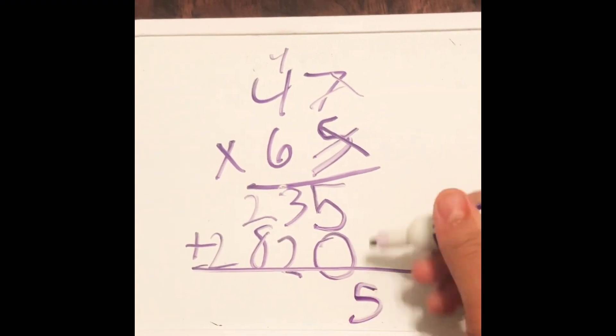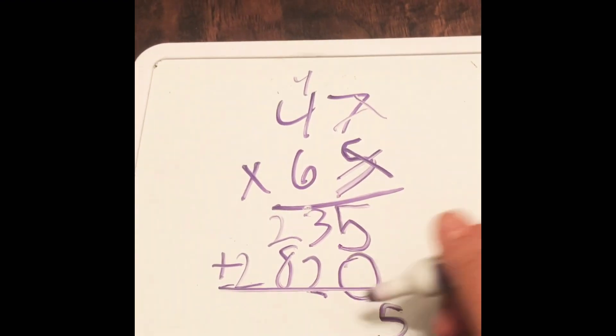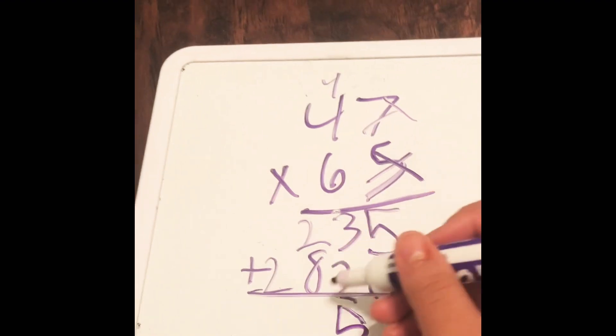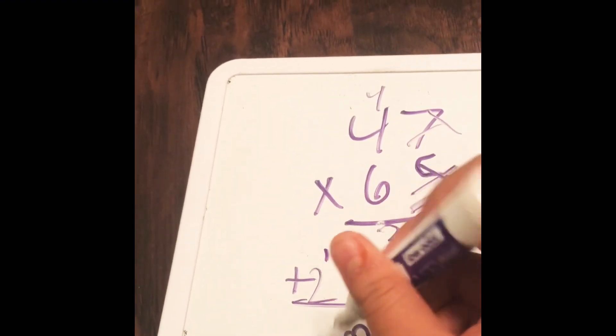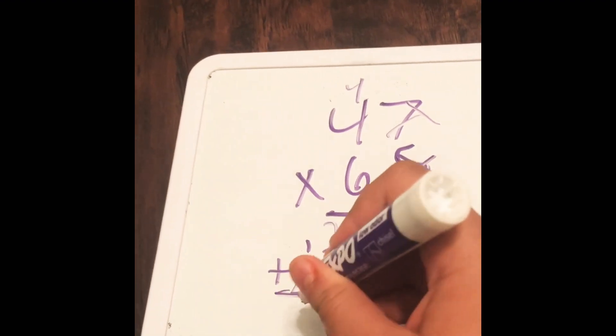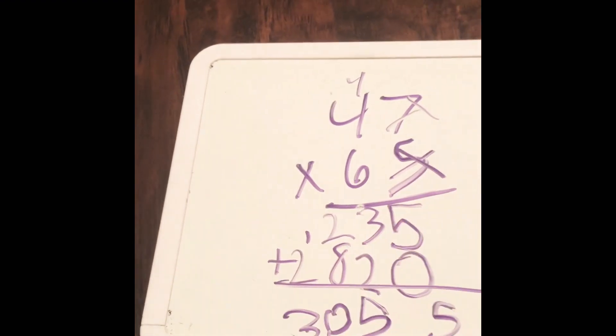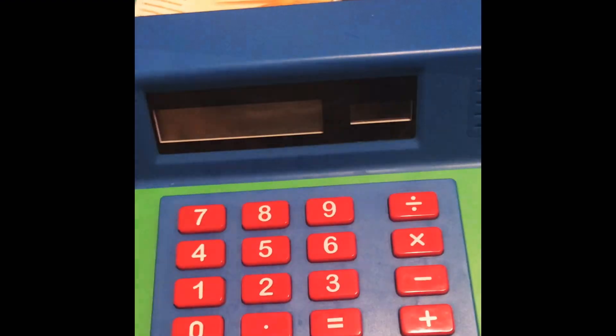So five plus zero equals five, three plus two equals five, two plus eight equals ten carry one, one plus two equals three. So 3,055. Let's check our answer.